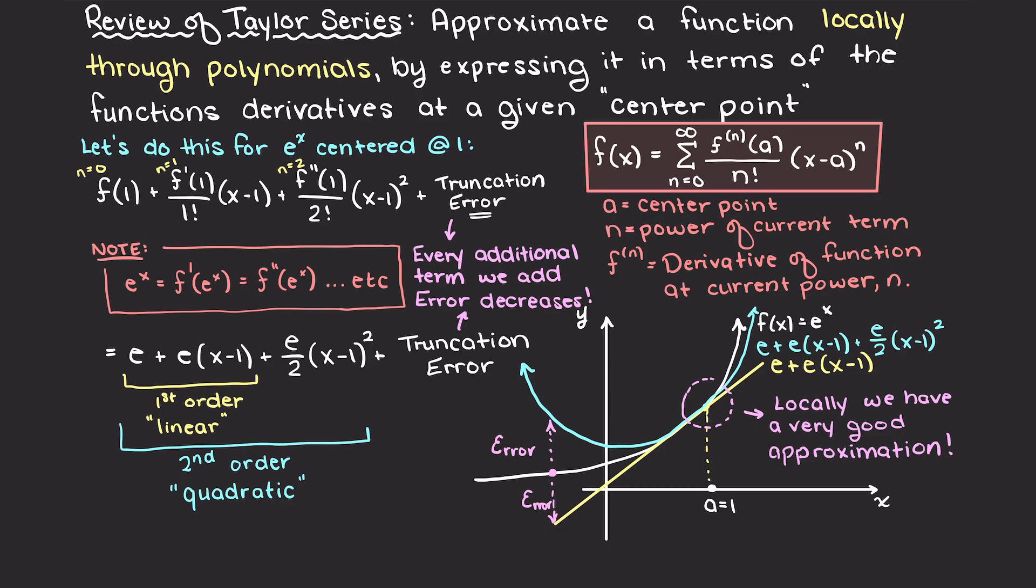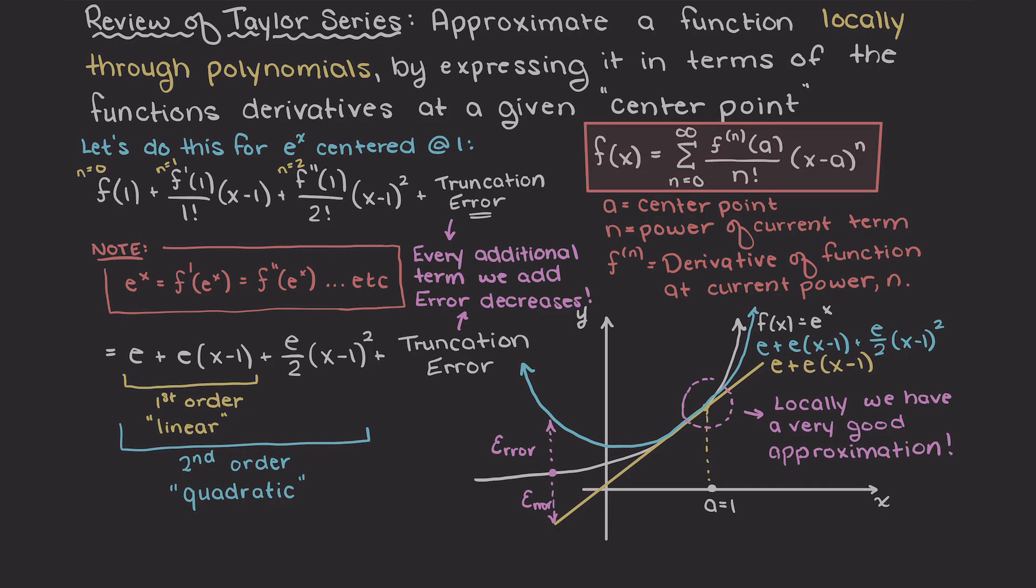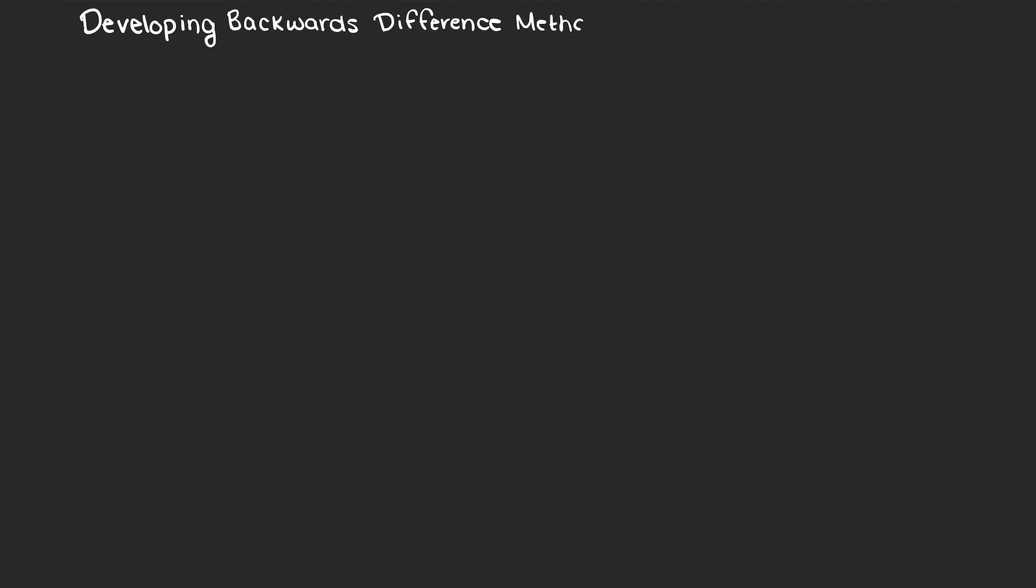Now that we have reviewed Taylor series approximations, how does this help us understand the error of our backwards difference method? Let's begin by writing out a couple terms of the Taylor series expansion for some previous x point slightly behind our current data point.